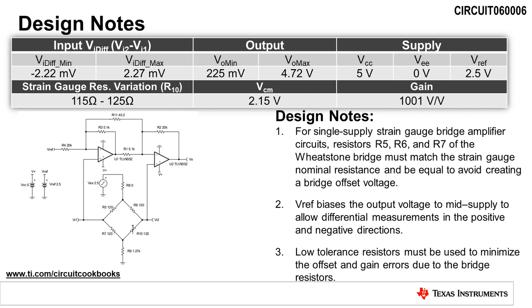First, resistors R5, R6, and R7 of the Wheatstone bridge must match the strain gauge nominal resistance and must be equal to avoid creating a bridge offset voltage.